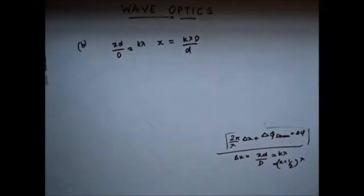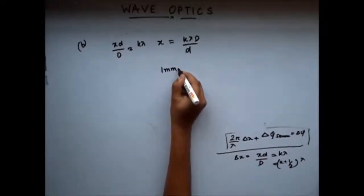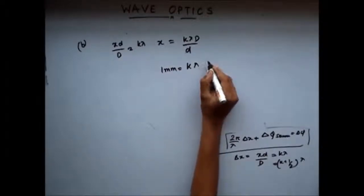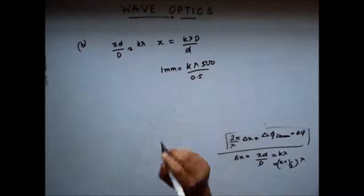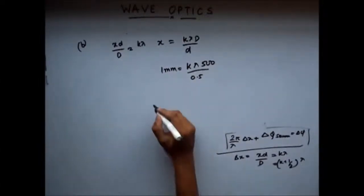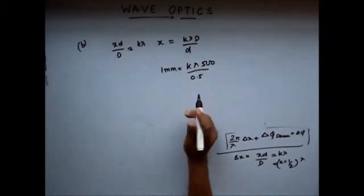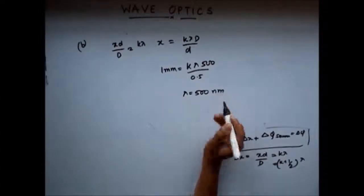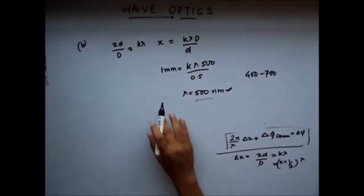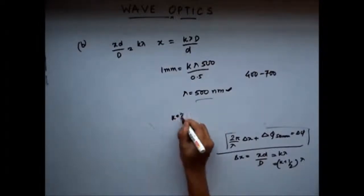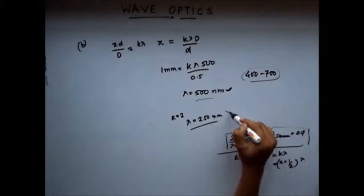Let's put k equals 1. I will get lambda as 500 nanometer. This wavelength lies in the range of 400 to 700 nanometers, so this is one wavelength which will have constructive interference at 1 millimeter from the center line. If I put k equals 2, then I will get lambda as 250 nanometer. This does not lie in the range of white light, so this is not a valid solution. Therefore, the only wavelength giving constructive interference is lambda = 500 nanometer.